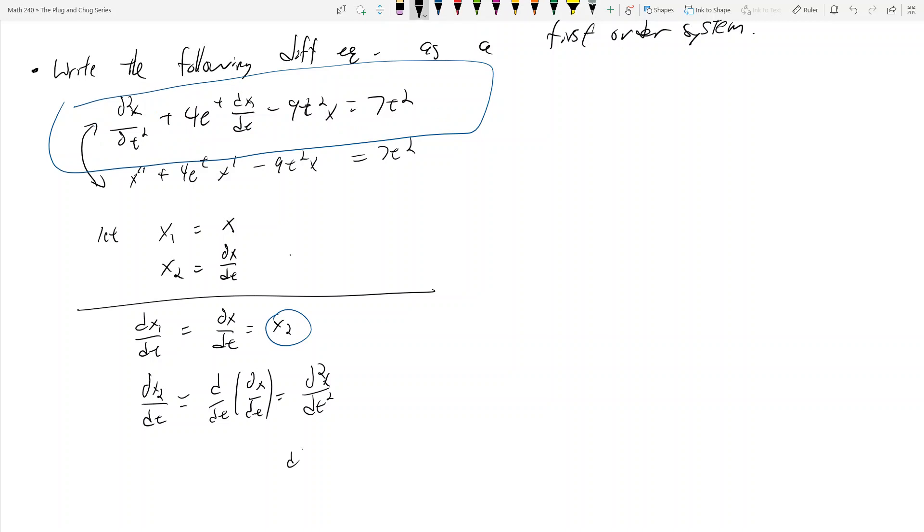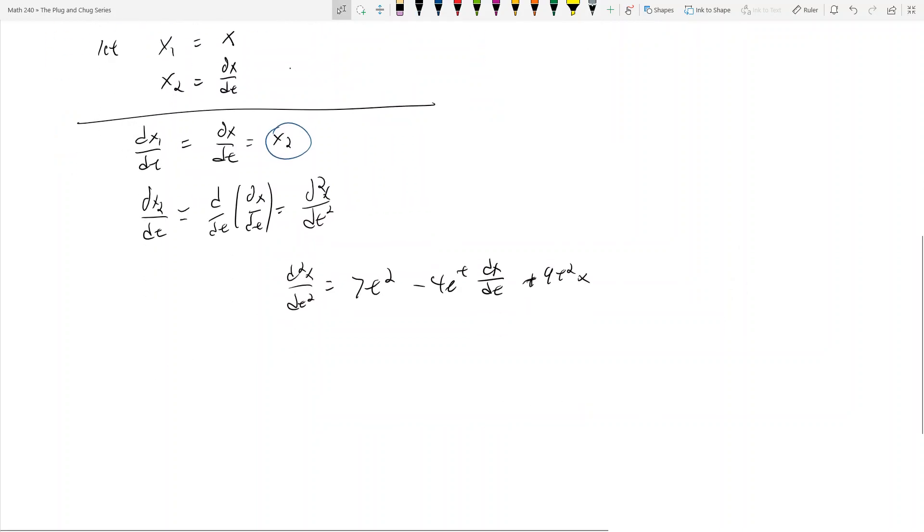So d squared x dt squared equals 7t squared, and then you subtract 4e to the t dx dt. That's from here. And then you add 9t squared x.